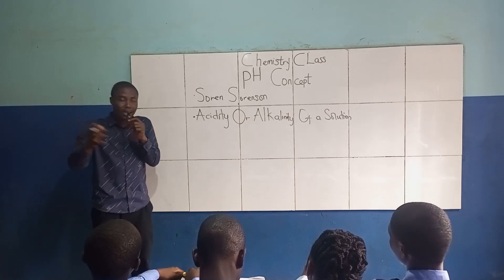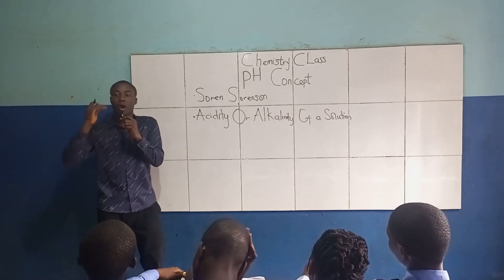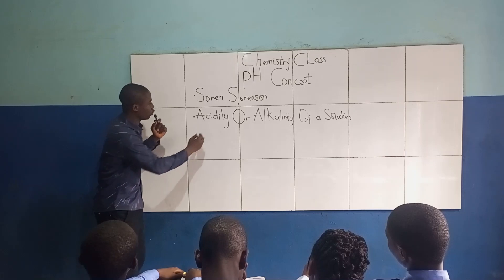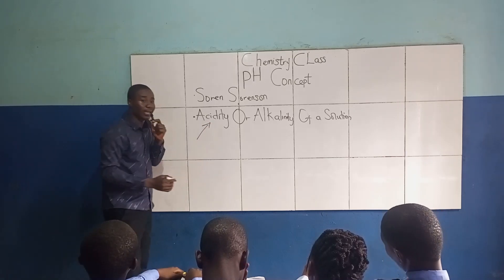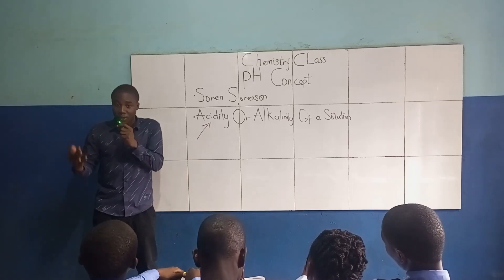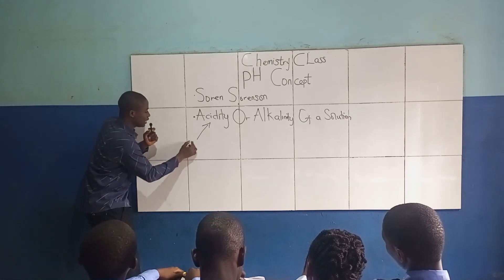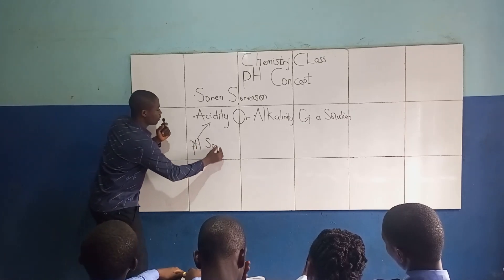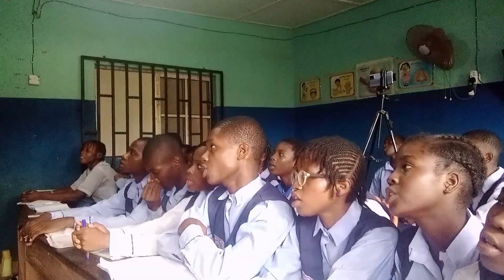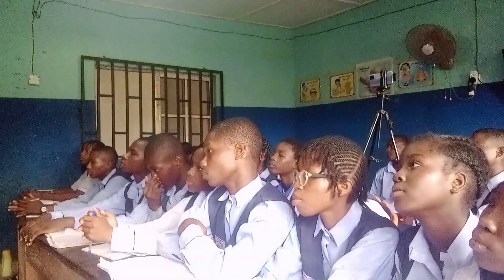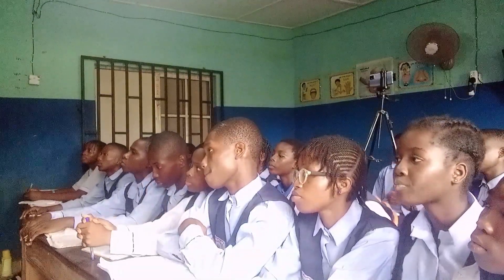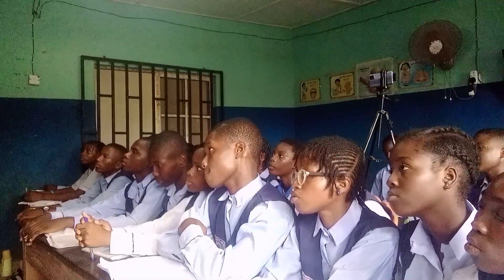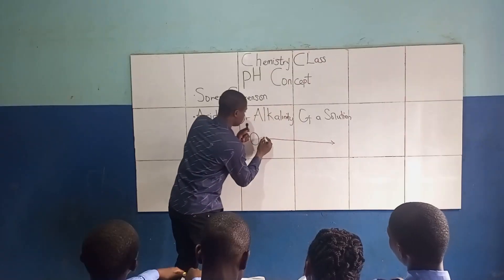There is a scale that measures the degree of acidity or alkalinity of a solution, and that scale is simply called the pH scale. This pH scale ranges from 0 to 14.